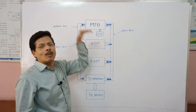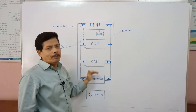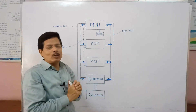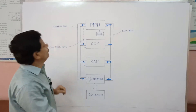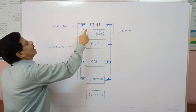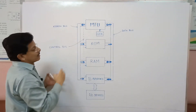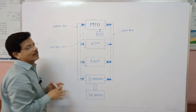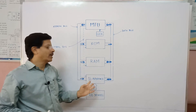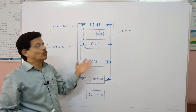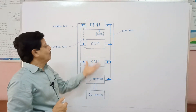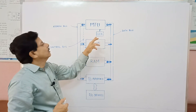The function of the data bus is to carry data or information from memory to microprocessor or from microprocessor to memory. Then we have the third bus, which I have shown as a dotted line. This is the control bus, and it carries timing and control signals from the microprocessor to the ROM chip, RAM chip, and I/O interface chips for controlling their functions.